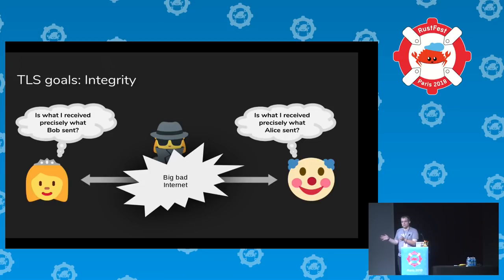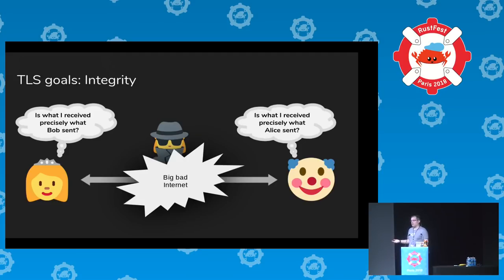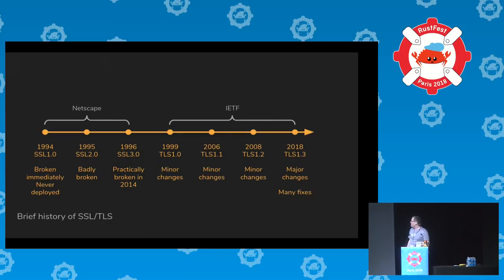There's also truncation resistance, similar to the replay problem but at the end of the communication. In practice this doesn't work well because people aren't willing to treat TCP closures of the TLS channel as a security problem. If you're designing a protocol — like a transaction database where your first message is 'start a transaction' and the last is 'commit' — an attacker chopping off the commit could be disastrous.